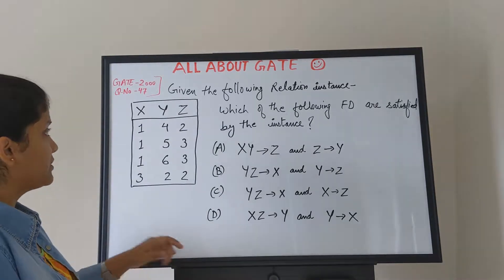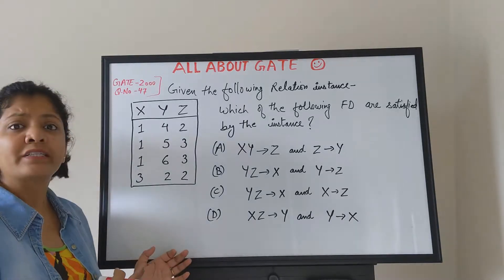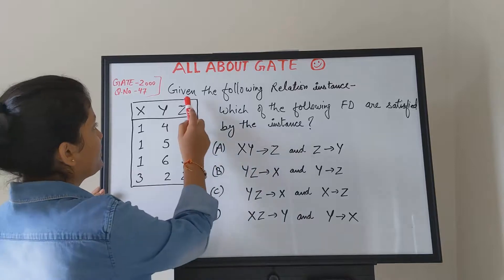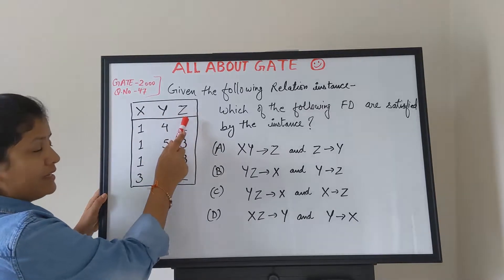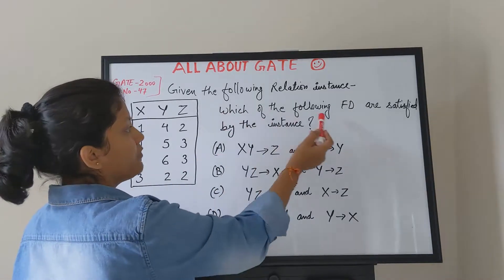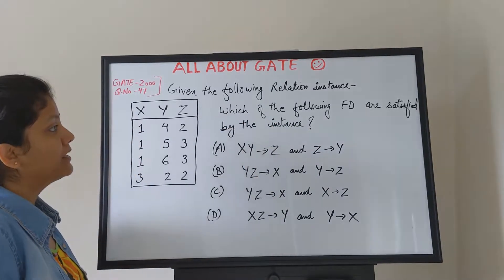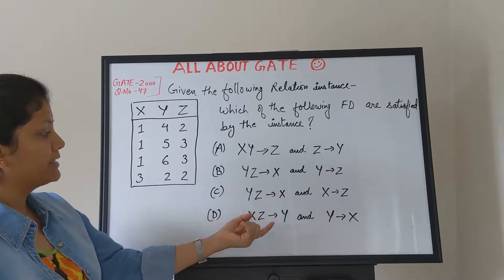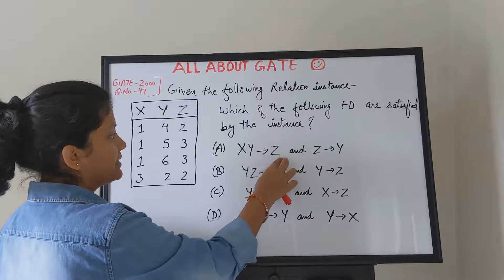The first question is from GATE 2000, question number 47 — a very easy question. The relation instance has three attributes X, Y, and Z, with four tuples given. The question asks: which of the following functional dependencies are satisfied by this instance? That means, looking at this instance, you have to tell which FD is true for the given four tuples.